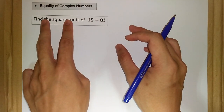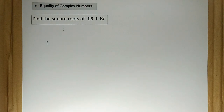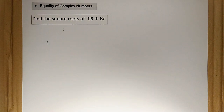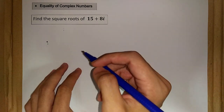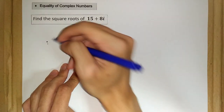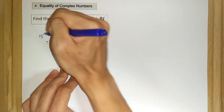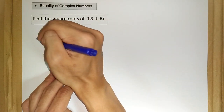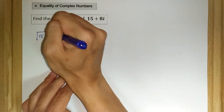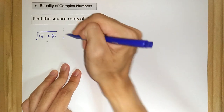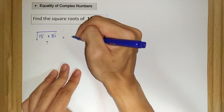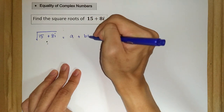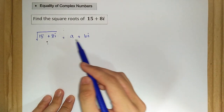So let's look at this question. Find the square roots of 15 plus 8i. So we have the number 15 plus 8i and we want to find its square root. We set the square root of 15 plus 8i equal to the general form of a complex number, a plus bi, and we want to find the values of a and b.